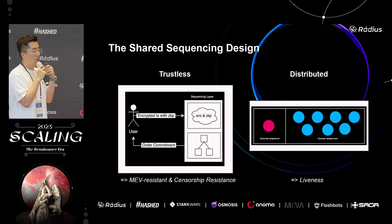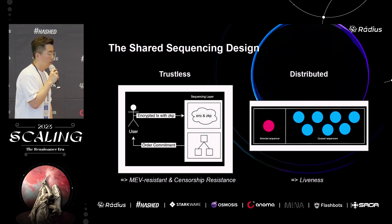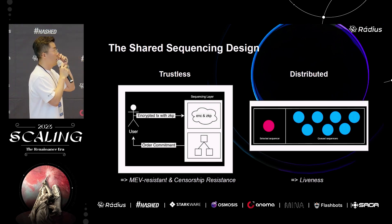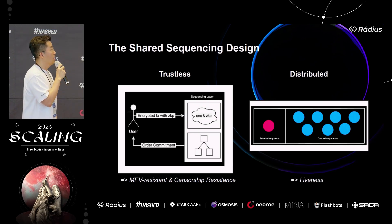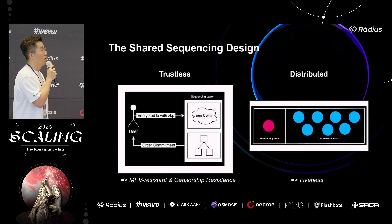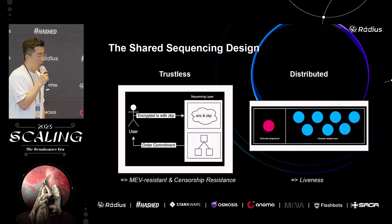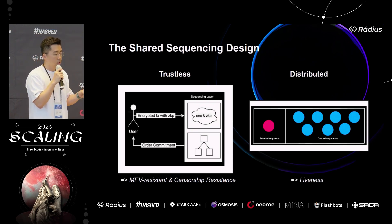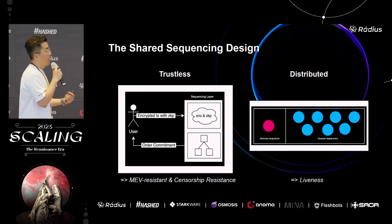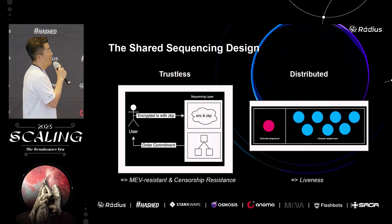That's how we enforce that the sequencer layer and rollups do as promised. Another pillar is the distributed sequencer layer. If there's only one sequencer, liveness is really bad. So for liveness, we will have multiple sequencers — a sequencer is randomly chosen to build a block per epoch, and if that sequencer goes down, another sequencer will cover.